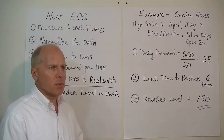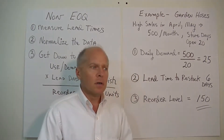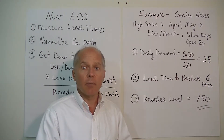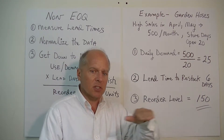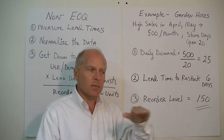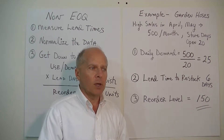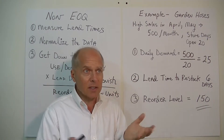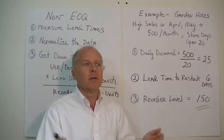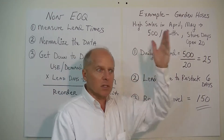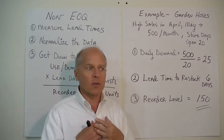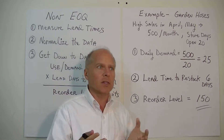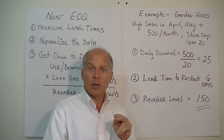In the previous lesson we went through an example of economic order quantity, where we applied it to a commodity — something that sells consistently and stably over time. But the reality is a lot of things aren't necessarily commodities. Some inventory items are quite seasonal, very volatile, and fluctuate quite a bit during the year, so the EOQ model just doesn't fit.